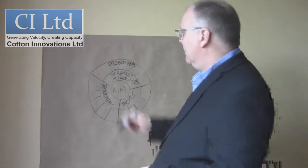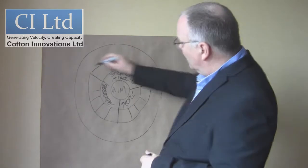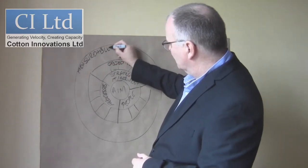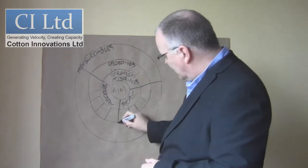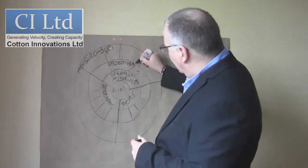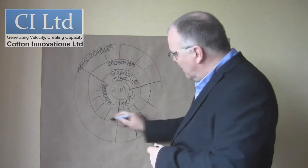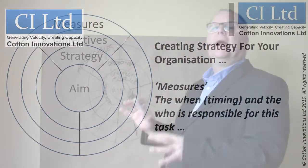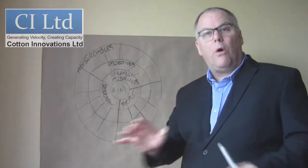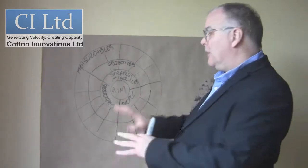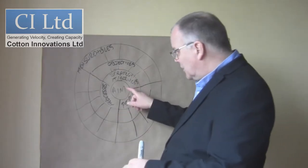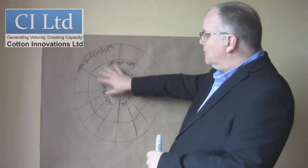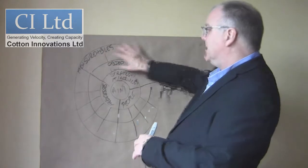That leaves us with one extra piece: the measurables. We carry these three lines all the way out, and for each one of these objectives we have a set of measurables. What do we mean by measurables? It's quite simple — when are you going to do it? These are your time-dependent activities. Who's responsible? Who's going to be delivering it? And what will success look like? Now I have the ability to start creating my strategy: deliver the aim, built on three strategies, set against these objectives and tasks, measured against a timeline.